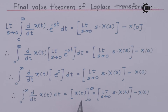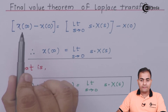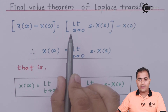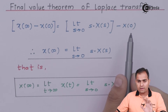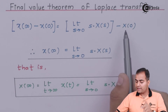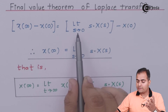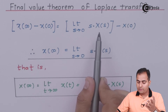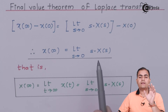Substituting the limits: the upper limit gives x(∞) and the lower limit gives x(0), so the left-hand side is x(∞) − x(0). On the right-hand side we have limit s→0 of s·X(s) minus x(0). Since x(0) appears on both sides, they cancel, leaving x(∞) = limit s→0 of s·X(s), which is our result.